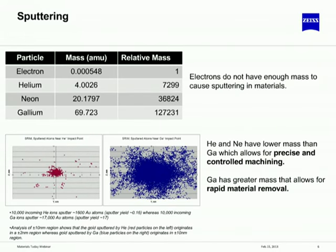The main way to create nanostructures is through sputtering — the physical removal of material using your ion species. Comparing the relative masses: helium is about 7,000 times greater in mass than electrons, neon is about 36,000 times more massive, and gallium is even more massive. TRIM simulations show that sputtering of a 100 nanometer gold film due to helium is much tighter and more controlled compared to gallium.